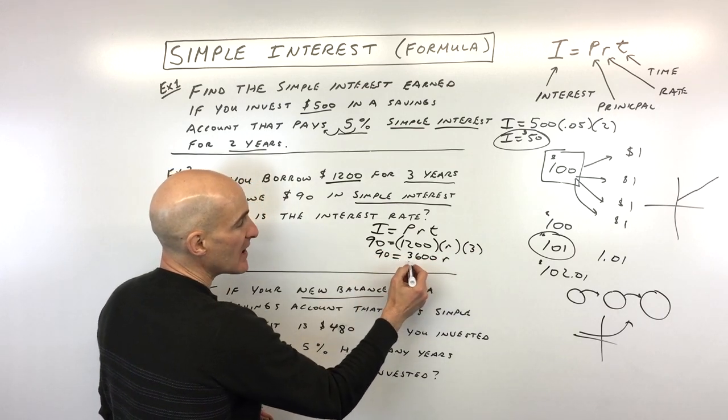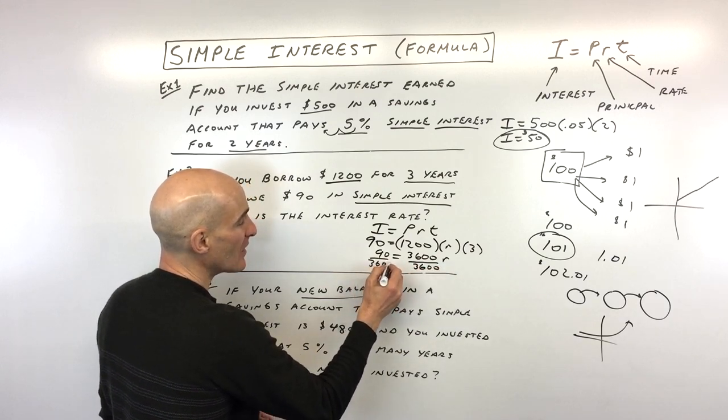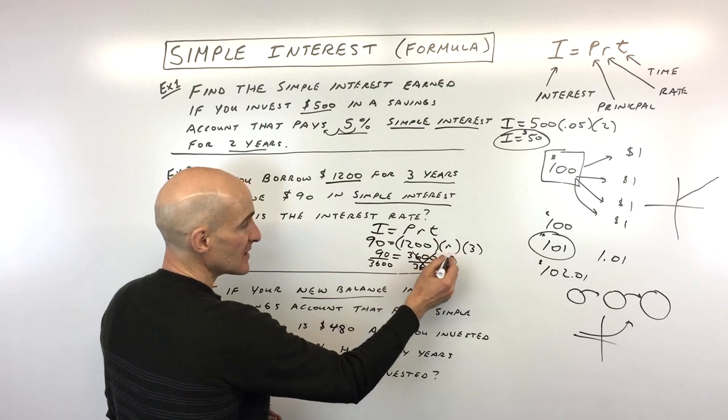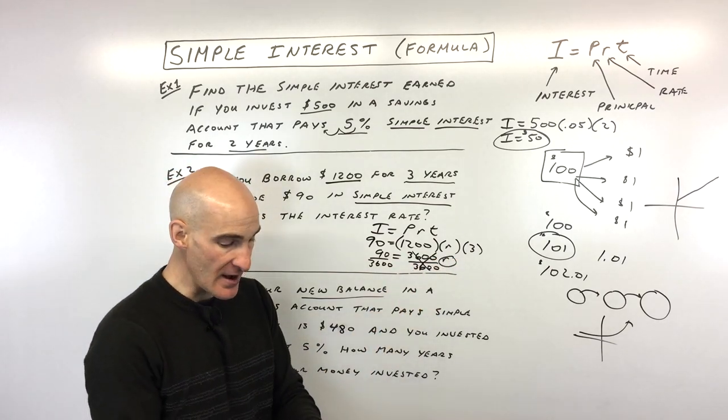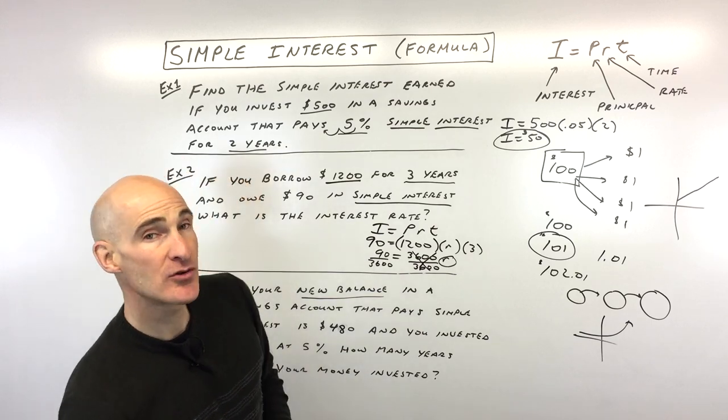We just want to get R by itself. So we're going to do the opposite of multiplying by $3,600. We divide both sides by $3,600 to get R by itself. Now let's go to the calculator.